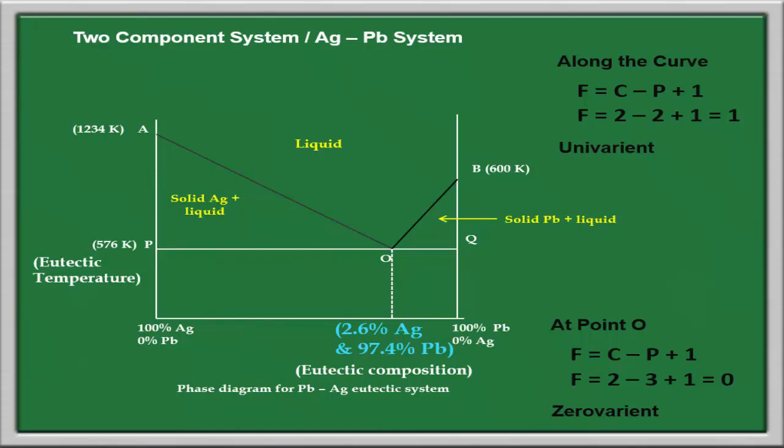Consider a mixture at point P containing less than 2.6% silver. When this mass is allowed to cool, it cools down without any change in composition until point P' is reached on curve BO. On lowering the temperature further, lead begins to separate out and the composition varies along P' until point O is reached. On further cooling, the whole mass solidifies to the eutectic composition. This means no mixture of lead and silver has a melting point lower than the eutectic temperature.